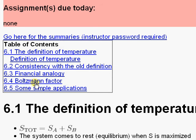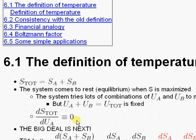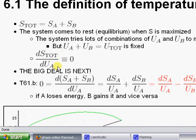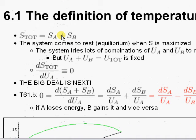the old definition, the financial analogy, the Boltzmann factor, and some simple applications. So scrolling down here a little bit, start with the definition of temperature. We have this notion that the total entropy of a system is just the sum of the various entropies. This came about because we did the natural log in the previous chapter.